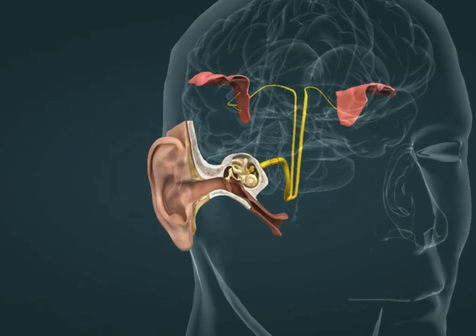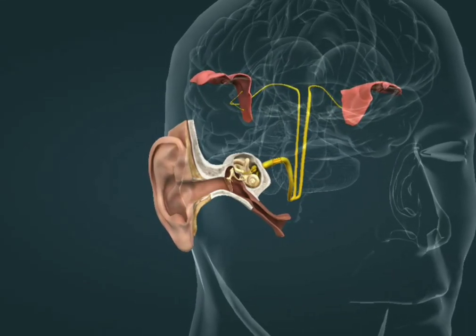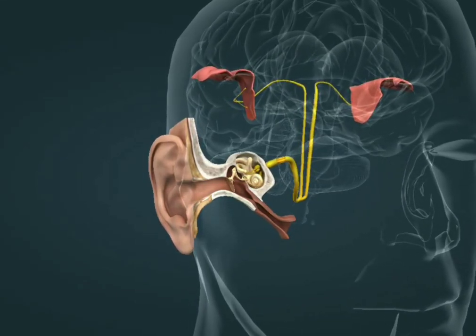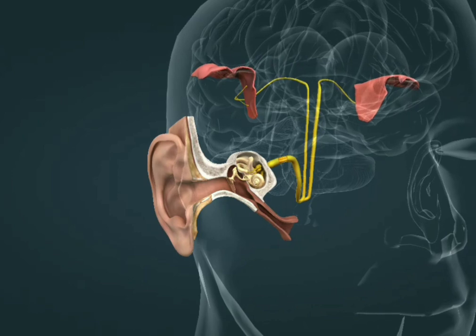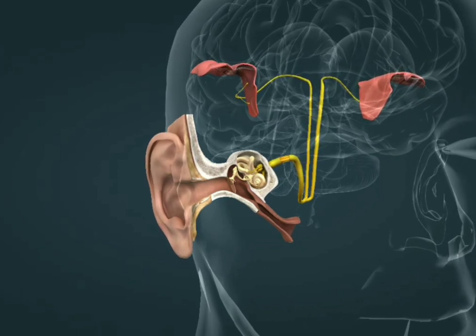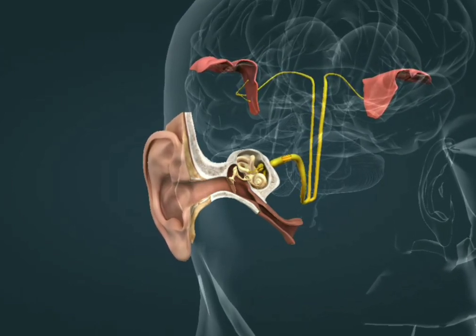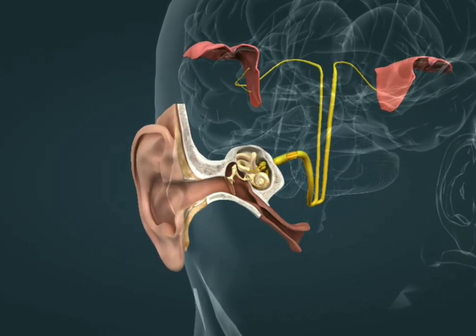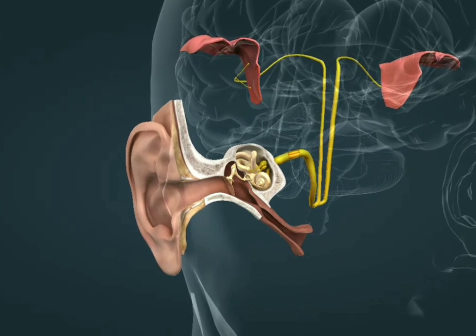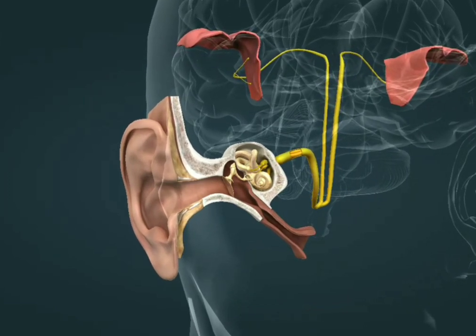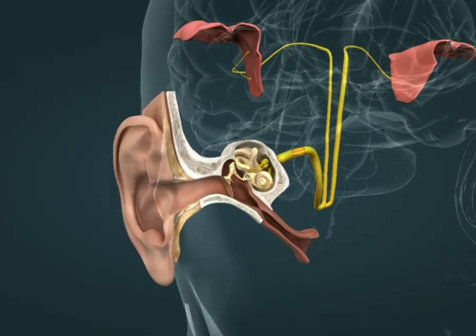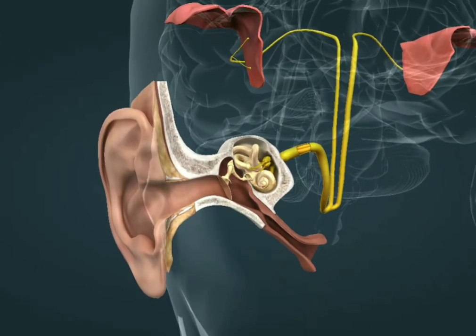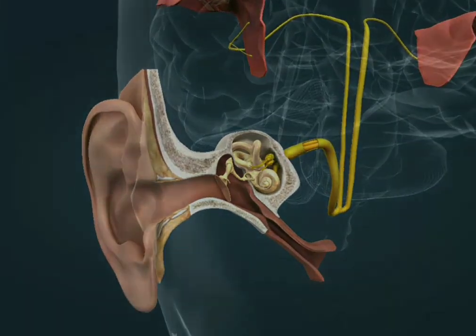This range will become narrower due to aging or noise exposure. Sound waves create signals in the inner ear, which are transmitted to the auditory cortex by the cochlear nerve and auditory pathway. The sense of sound is produced in the auditory cortex.